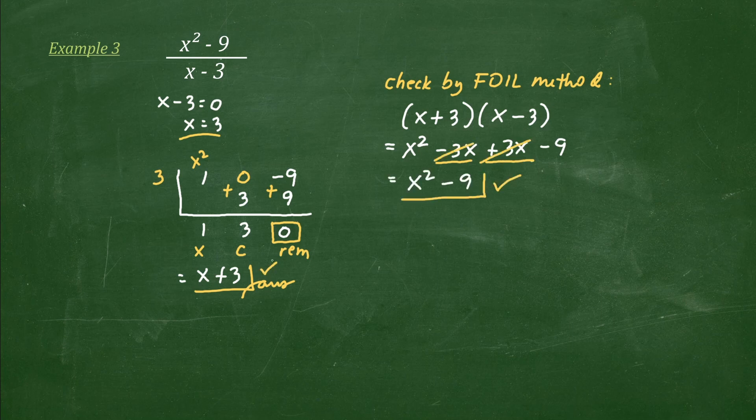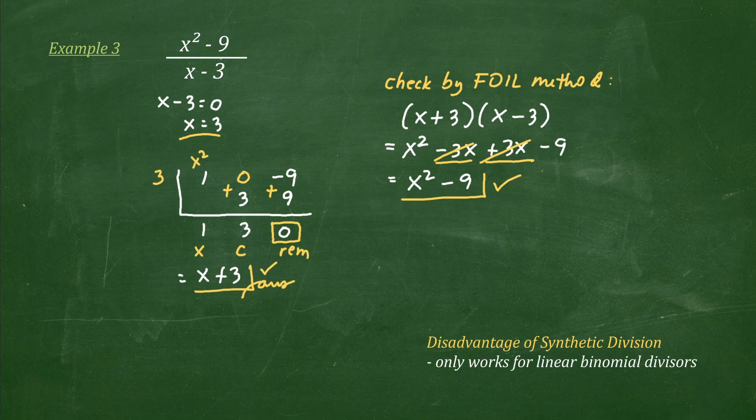I hope you now understand synthetic division better. It's really a fast way of dividing a polynomial by a binomial. In fact, this will be used in intermediate algebra as you learn rational roots — but that's for another video. There is a big disadvantage of synthetic division though: this will only work for linear divisors, meaning the degree of the divisor should be 1.